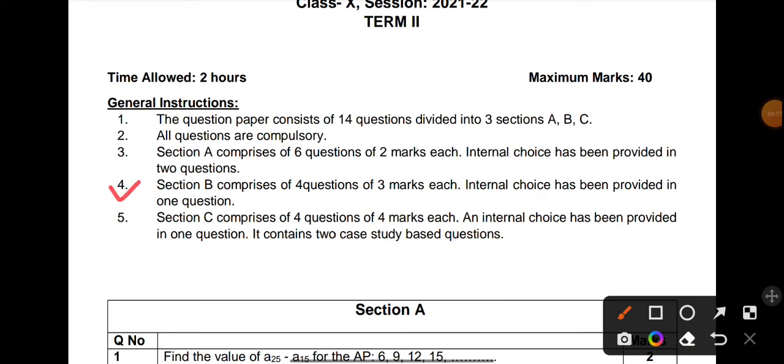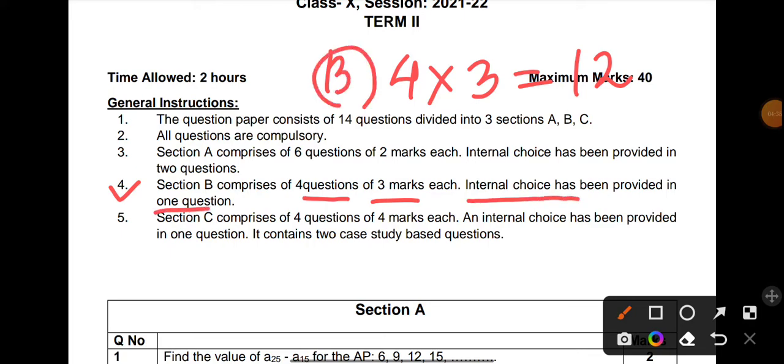Coming back to Section B, Section B contains 4 questions of 3 marks each, so again it will become 12 marks from Section B. How much internal choice here? Internal choice has been provided in only one question. You got it for 2 questions in Section A, here you'll get OR in one question. Is that clear? Very clearly. So Section A is 12 marks, Section B is also 12 marks. 12 plus 12 becomes 24 from Section A and Section B.